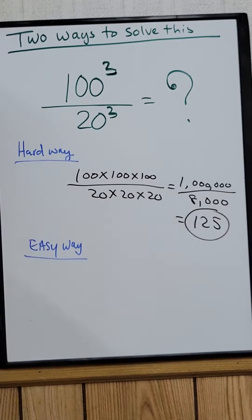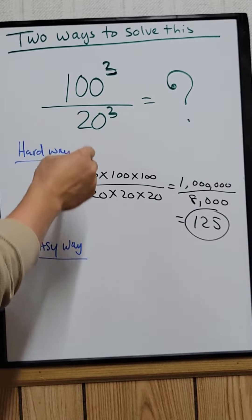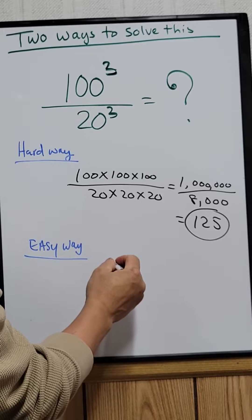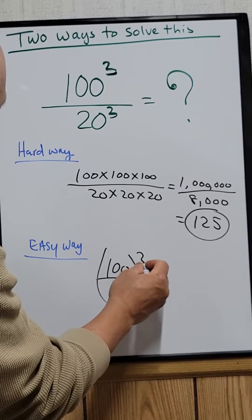The easy way would be to rewrite this. So 100 cubed divided by 20 cubed you can also write as 100 divided by 20 and then cube both of them.